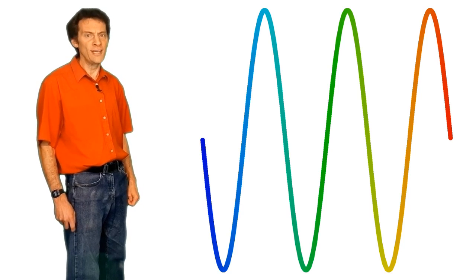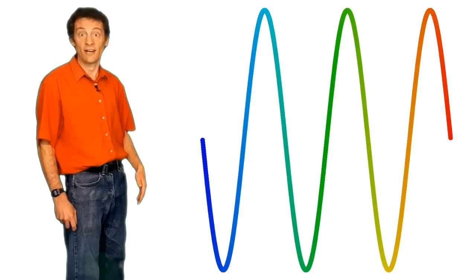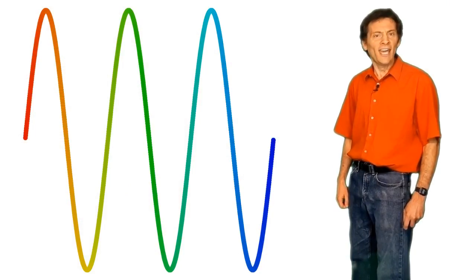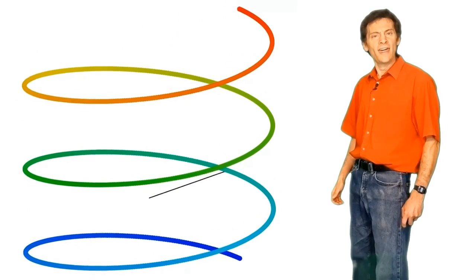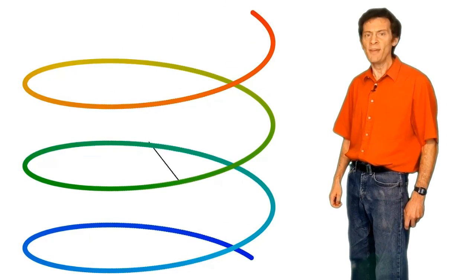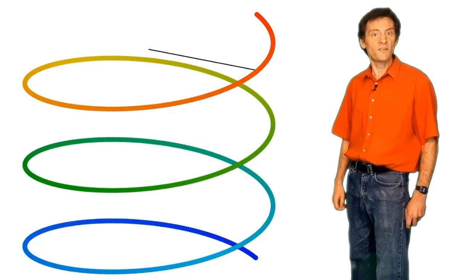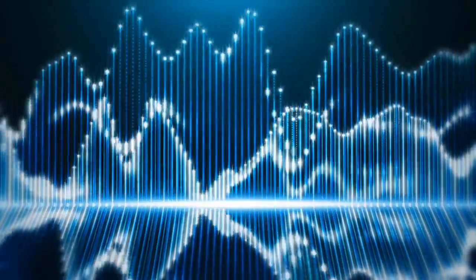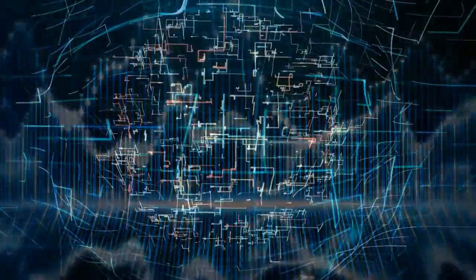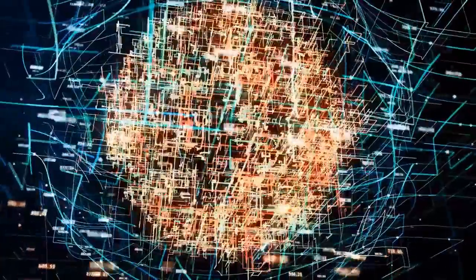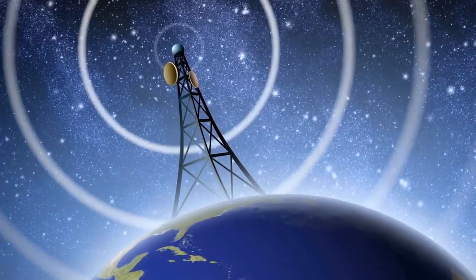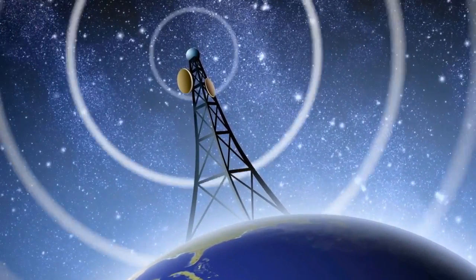At least when you think of frequency as how many times an event, like a vibration in the air, occurs every second. However, if you look at frequency differently, then the concept of negative frequency becomes a little easier to understand. In this video, we're going to find out what negative frequency is, why negative frequency, imaginary numbers, and the complex conjugate are so important to the magnitude spectra of signals, and what effect negative frequency has in the real world, just in case you thought it was only a quirk of the maths.